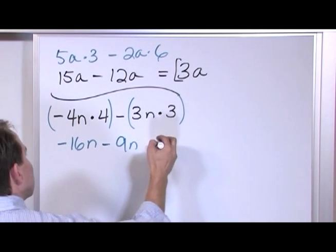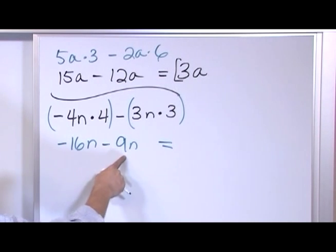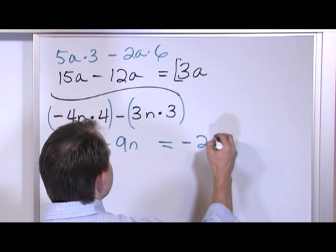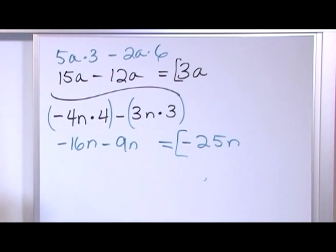Now we have like terms. We can collect them. Negative 16 minus 9 is going to be negative 25. 25 what? 25n because that like term is hanging out there. So negative 25 times n.